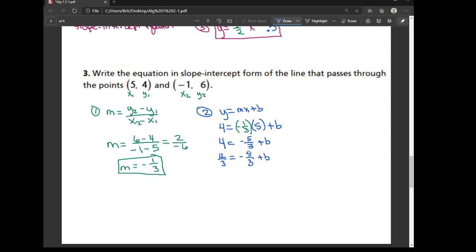And so what that does is that finds a common denominator, so that when I go to add 5 thirds to each side of the equal sign here, I can just combine them right away. So 12 thirds plus 5 thirds is 17 thirds, and that's my b value.